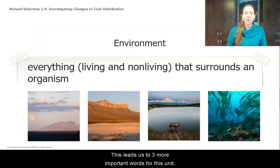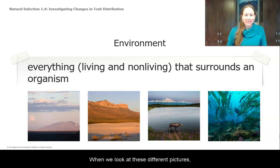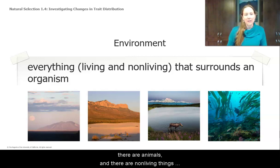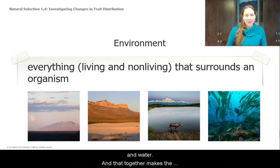This leads us to three more important words for this unit. The first one is environment. Environment is everything, living and non-living, that surrounds an organism. So when we're looking at these different pictures, right? Each of these places, there are living things, there are plants, there are animals, and there are non-living things like air and rocks and water. And that together makes the environment where these different organisms live.